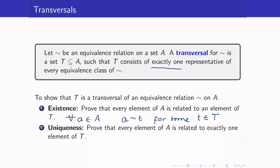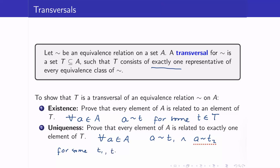To show uniqueness, we will show that if we get an arbitrary a in A and a is related to T1, and a is related to T2, where T1 and T2 are in T, then T1 must be the same as T2.